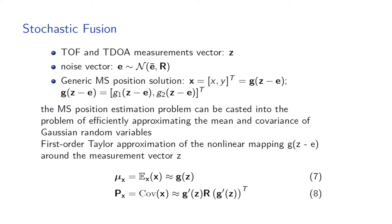In this section, we consider the more realistic assumption that time-of-flight and time-difference-of-arrival measurements are affected by noise. We assume that the MS position solutions from the previous section are affected by measurements corrupted by additive noise. Let Z denote the vector containing the measurements, and let E denote the noise vector, assumed Gaussian distributed with mean E-bar and covariance matrix R. The generic MS position solution can then be expressed as a nonlinear mapping function G that maps the stochastic vector Z minus E to the MS position X.